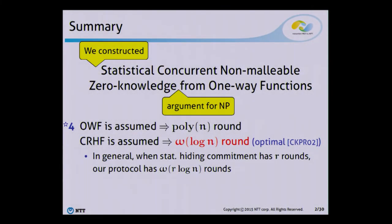And finally, I note that when only the one-way function is assumed, our protocol has a polynomial round complexity. But if we assume the existence of a collision-resistance hash function instead, then I can reduce round complexity to logarithmic. And this logarithmic round complexity is essentially optimal because our protocol is proven secure by a black-box simulation, and for black-box concurrent zero-knowledge, it is known that logarithmic round complexity is required.